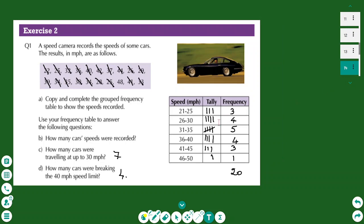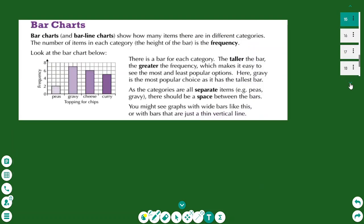To complete a grouped frequency table, you count the numbers and place them into their respective classes. Bar charts for grouped data look similar — you can compare different categories, and the taller the bar, the greater the frequency. Bar charts are very simple charts that are easy to understand.